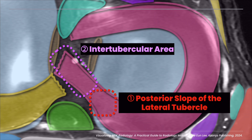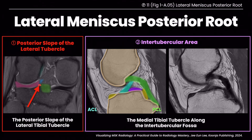On axial images, the posterior root of the lateral meniscus appears as a thin, oblique, low-signal band. But sagittal and coronal images tend to be more helpful. Let's look at the minor component of the posterior root of the lateral meniscus that attaches to the posterior slope of the lateral tubercle.